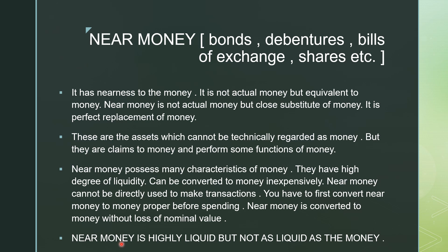Now we come to the term near money. As the name denotes, it is money which is near to money — it is not actual money, it has nearness to money. Examples include bonds, debentures, bills of exchange, and shares. Near money is not money proper; it is a substitute of money, equivalent to money. We can say it is a perfect replacement of money. These are assets which cannot technically be called money, but they are claims to money and perform more or less the same functions of money.